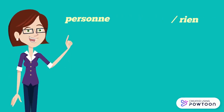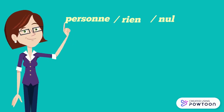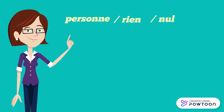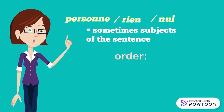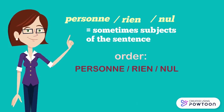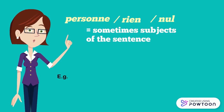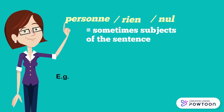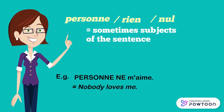Personne, rien, as well as nul used as a pronoun, are sometimes the subject of the sentence. The order is: personne / rien / nul + ne + the verb. For instance, personne ne m'aime — nobody loves me.